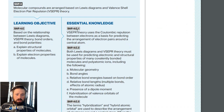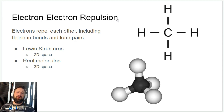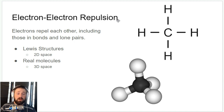VSEPR in general is going to be talking a lot about molecular geometry, electron geometry, and bond angles — what do these molecules actually look like? The first thing you need to know about Valence Shell Electron Pair Repulsion is that electrons repel each other. This makes sense because you have two negative charges, and just like two negative ends of a magnet, they're going to repel each other. Chemists are not clever namers — we call this phenomenon electron-electron repulsion.